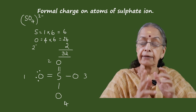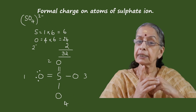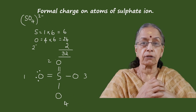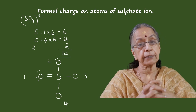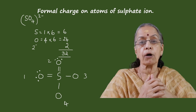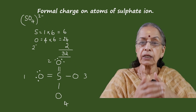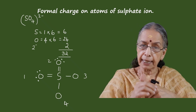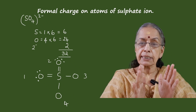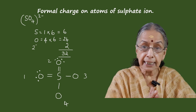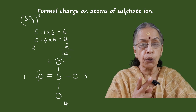Oxygen atom number two also has only seven electrons in its valence shell including the bond formed with sulfur. It also requires one more electron, so one of its electrons shares with another electron of the sulfur atom and forms a double bond. All six electrons of the sulfur atom are now used up — no more electrons are available from sulfur. For oxygen atom number two, four electrons are in the two bonds and the remaining four electrons remain as two lone pairs.